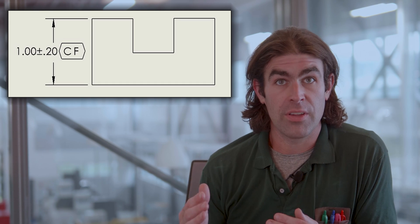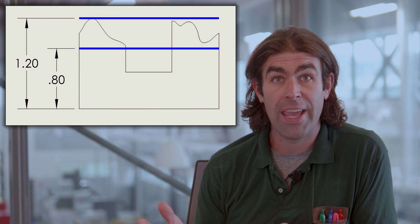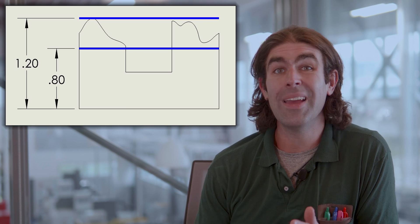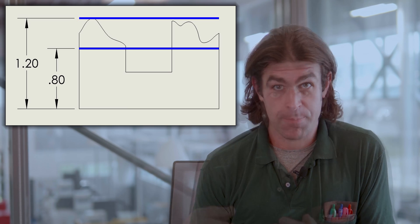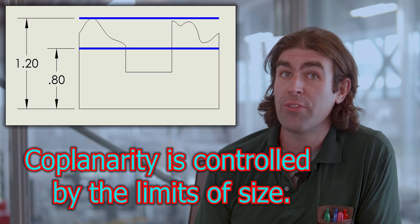Both of those surfaces on this part are going to work independently. One can be angled one way, one can be angled the other way. There's no real coplanarity involved with this particular symbol. What the continuous feature symbol does do, however, is make you gauge that part as one thing instead of checking each of those features individually.